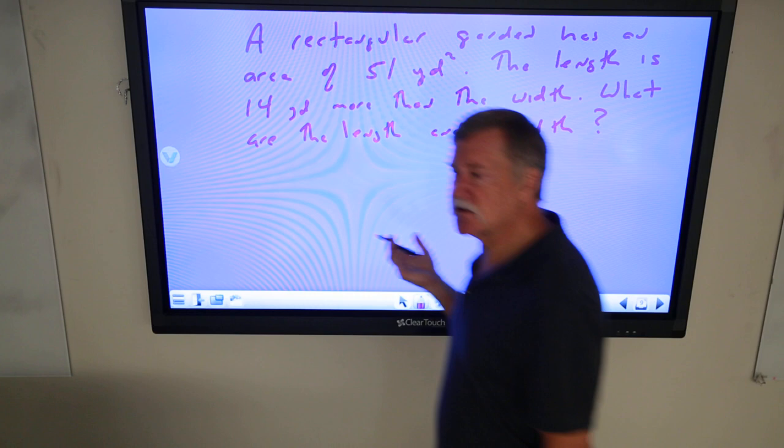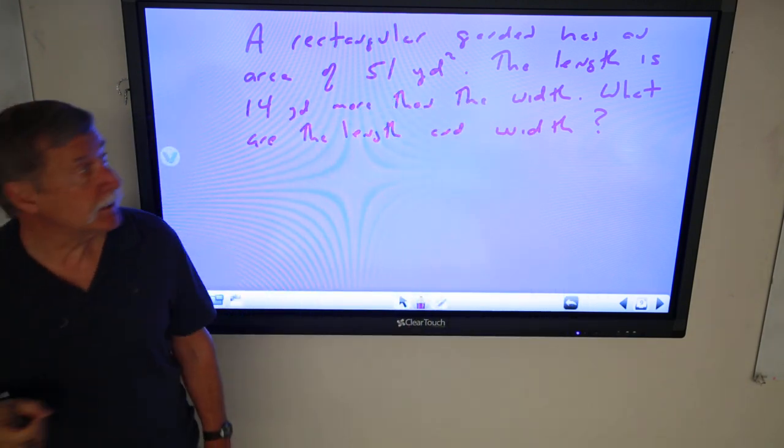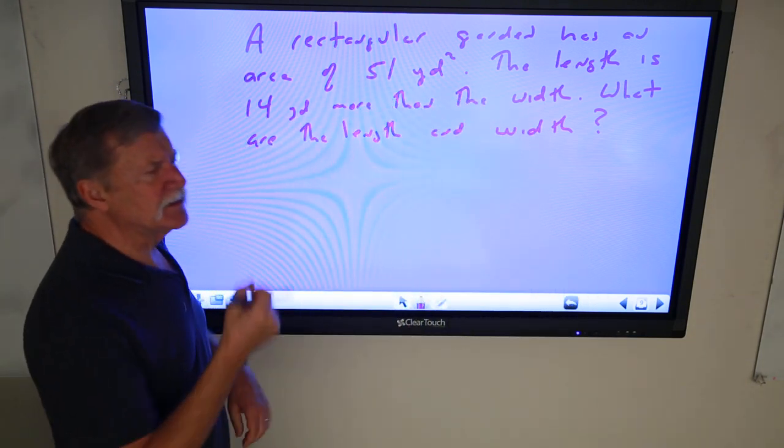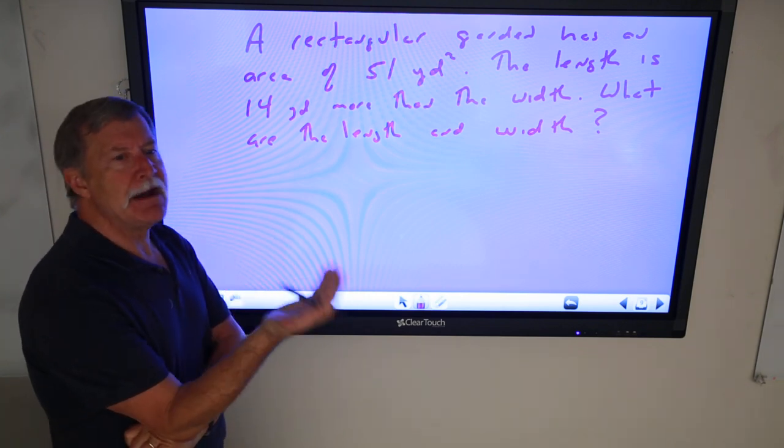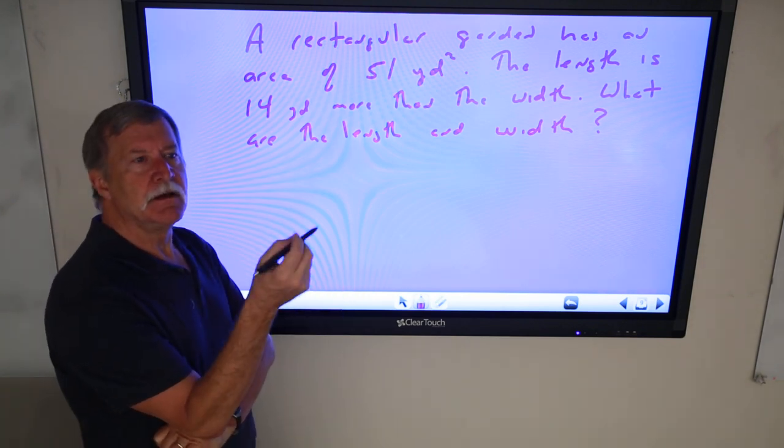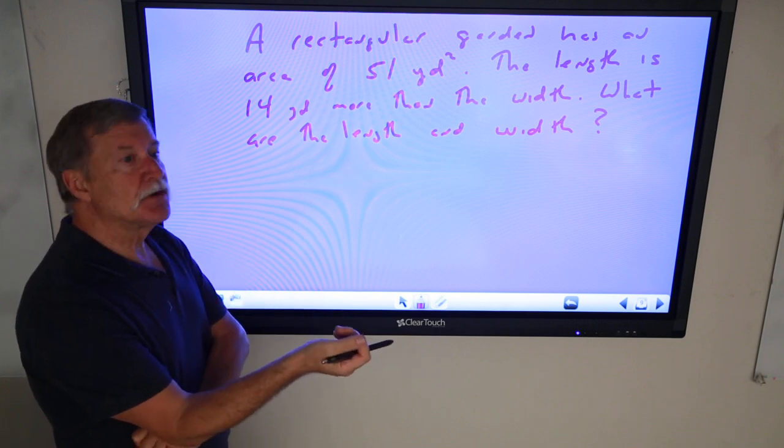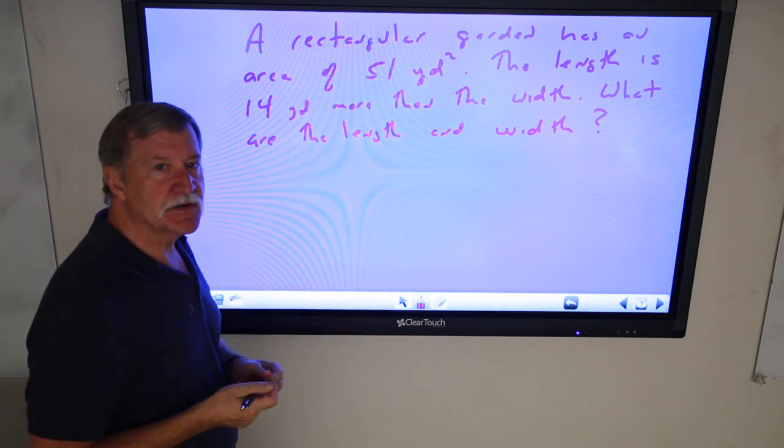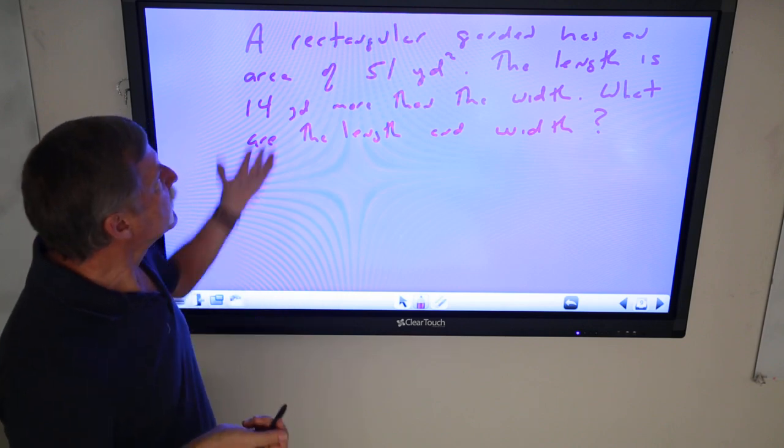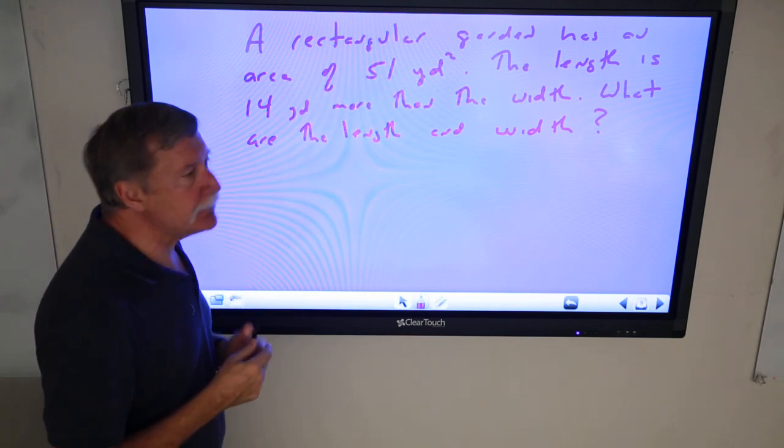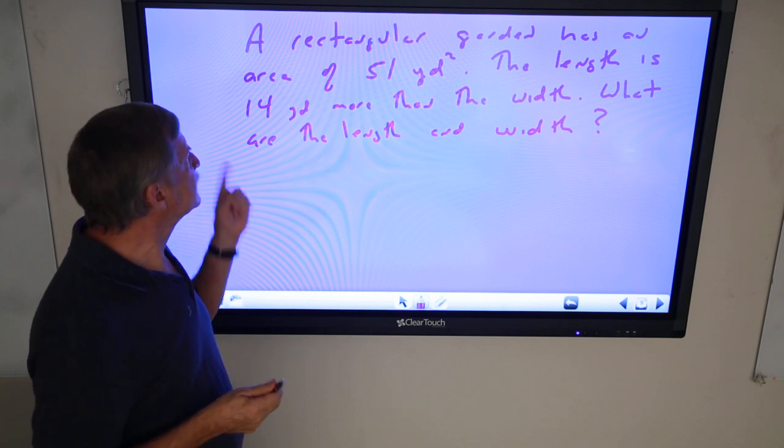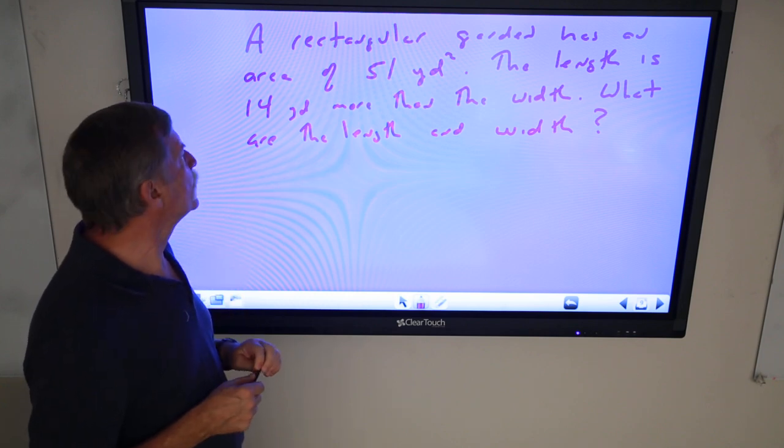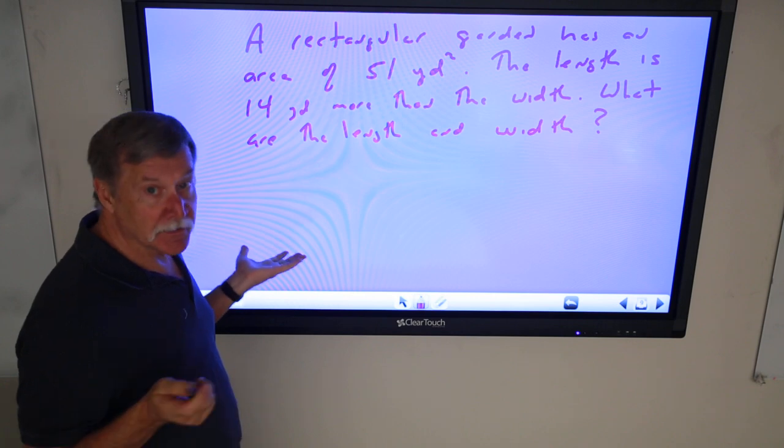Alright, and finally, practical application here, alright. Because now we can start thinking quadratically as far as area goes. Because area, when you deal with area, is square units. And so we can unsquare these units and try to figure out dimensions. A rectangular garden has an area of 51 square yards. The length is 14 yards more than the width. What are the length and the width?